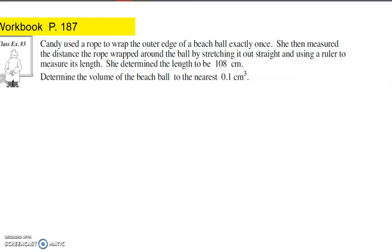Example number three is a little tricky, so we are going to read this and think about it really carefully. In this question, it says Candy used a rope to wrap the outer edge of a beach ball exactly once.